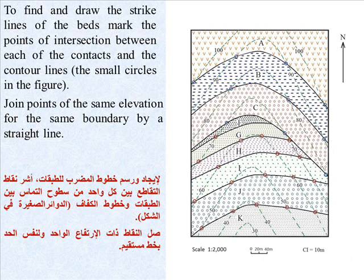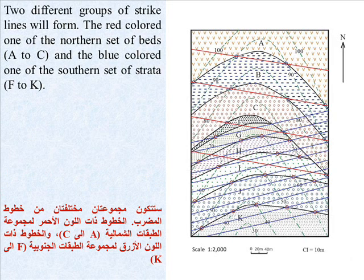Join points of the same elevation for the same boundary by a straight line. Two different groups of strike lines will form: the red-colored ones of the northern set of beds A to C, and the blue-colored ones of the southern set of strata F to K.